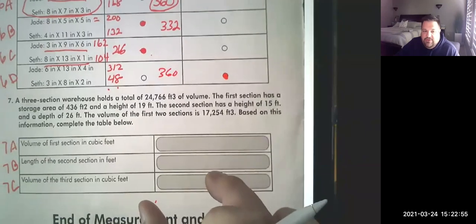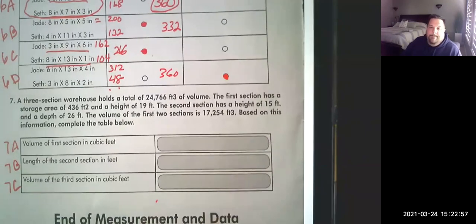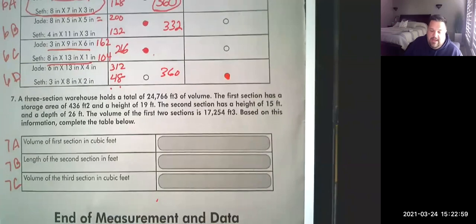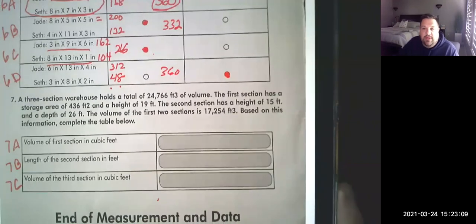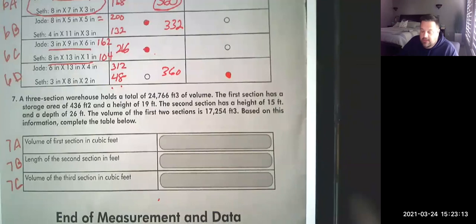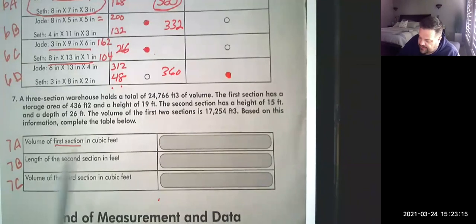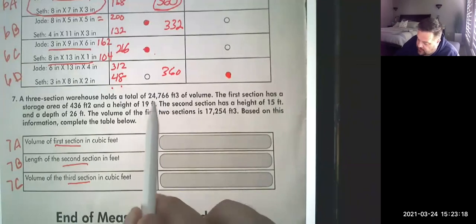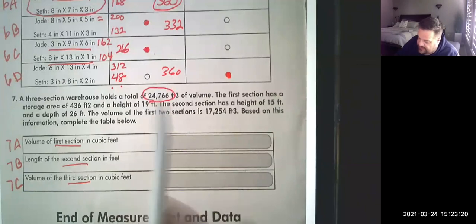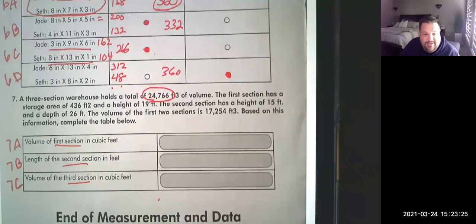All right, and take a second and pause and try to work out number seven, part A, B, and C. So this, you're going to end up with some big numbers. And this is just a reading word problem and then a big multiplication problem. There's nothing hard here. So you want to find the volume of the first section, second section, and third section. So the total volume is this 24,766. You're not going to really need that number necessarily, right? So let's start to look.